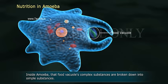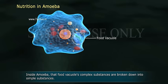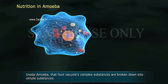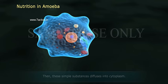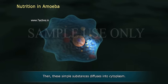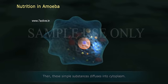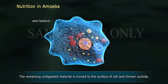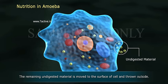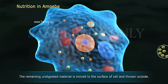Inside the amoeba, the food vacuole's complex substances are broken down into simple substances. These simple substances then diffuse into the cytoplasm. The remaining undigested material is moved to the surface of the cell and thrown outside.